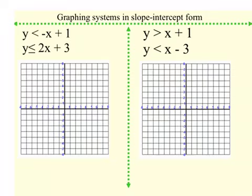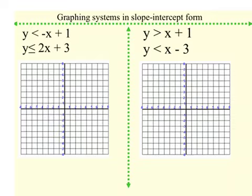So just like any other time we're graphing equations, we want to be in slope-intercept form. We need to have y equals, or y to be alone, before we can graph. In these first two examples the y is already alone, so we're just going to graph like we've been graphing since eighth grade.